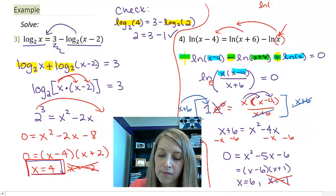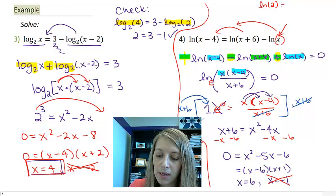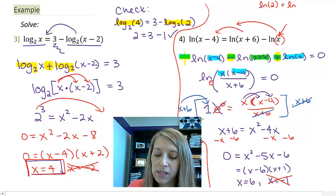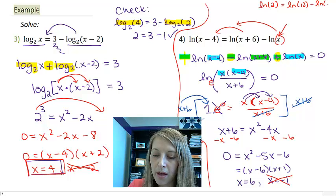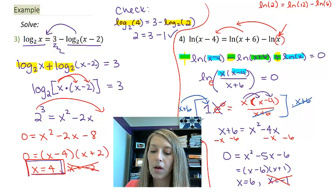So I have natural log of 6 minus 4, which is 2. Natural log of 6 plus 6 is 12, minus natural log of 6.